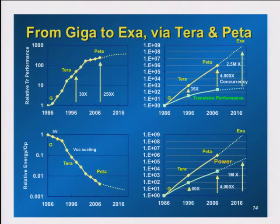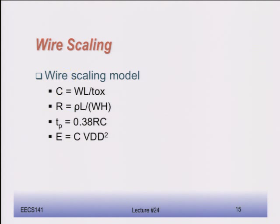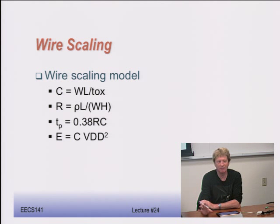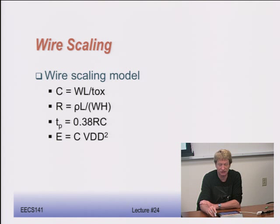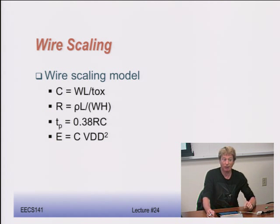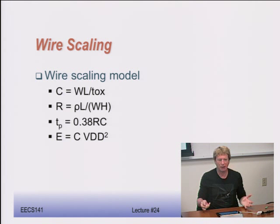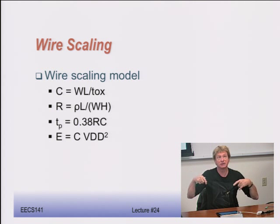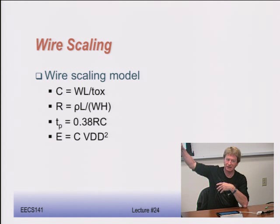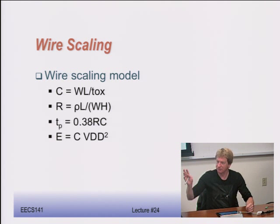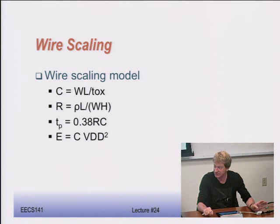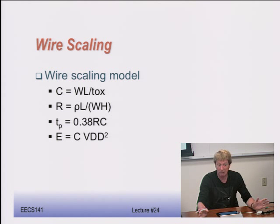So far the scaling model has only discussed transistors, which is a bit naive. When you connect transistors together, wires also play a major role and they don't scale as nicely. When people talk about the next-generation exaFLOP or even higher machines, many predict the biggest challenge won't be transistors — it'll be the interconnect: how do you get data in and out fast enough? Wires scale very differently from transistors.